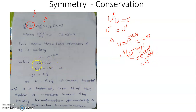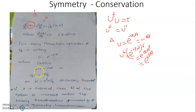When the commutator [A, H] = 0, one can prove that [U, H] = 0 as well. When [A, H] = 0, that means AH - HA = 0, i.e., AH = HA.